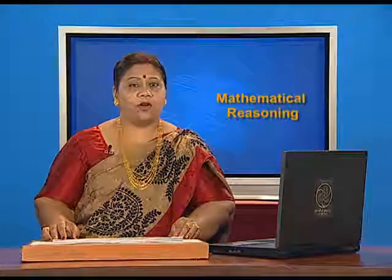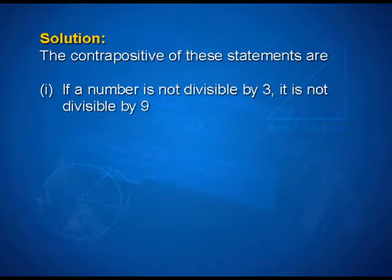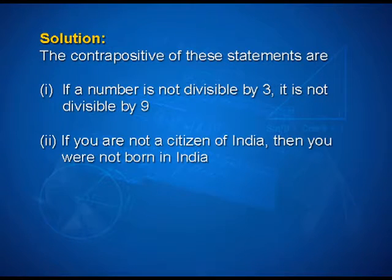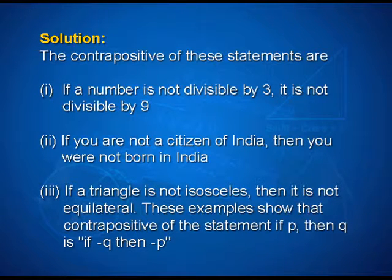Let us look into the solution. The contrapositives are: first, if a number is not divisible by 3, then it is not divisible by 9. Second, if you are not a citizen of India, then you were not born in India. Third, if a triangle is not isosceles, then it is not equilateral. These examples show that the contrapositive of the statement 'if p then q' is 'if not q, then not p'.